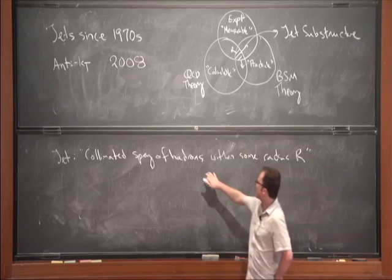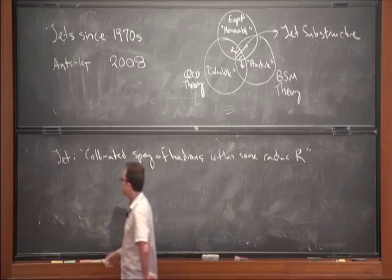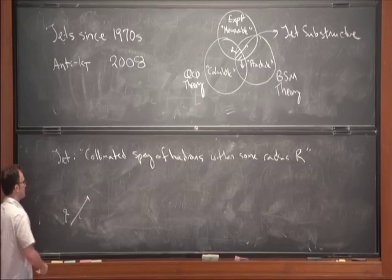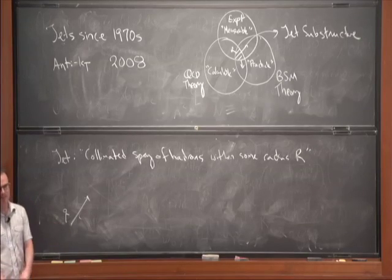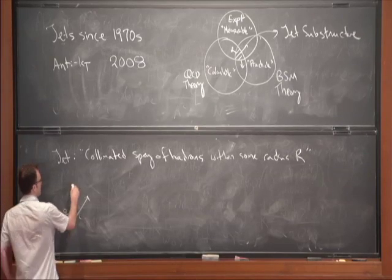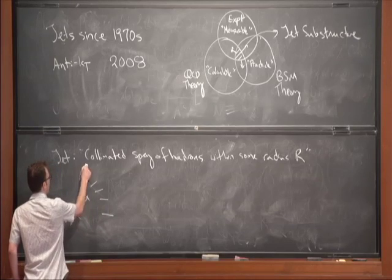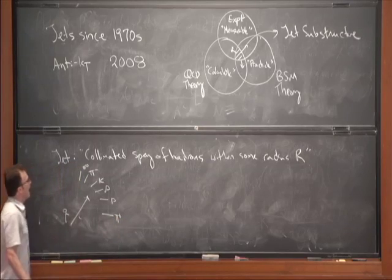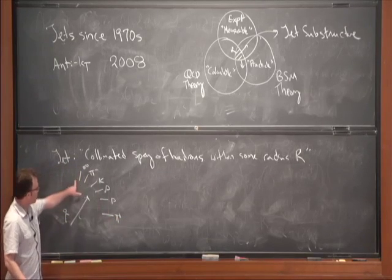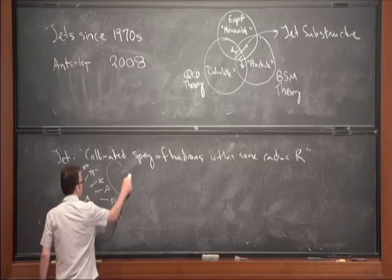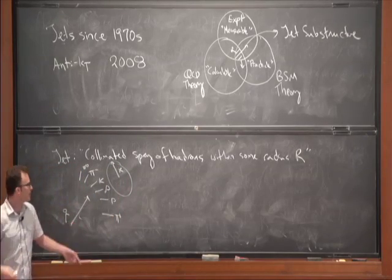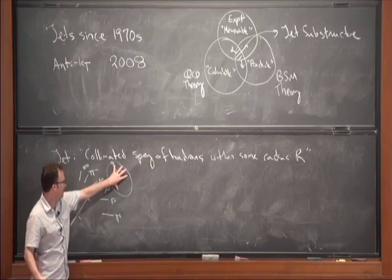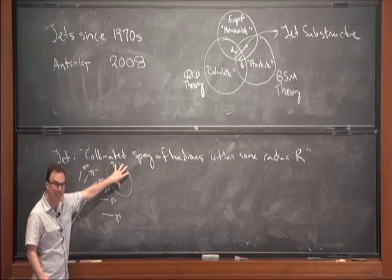By writing that definition, I've swept a huge amount of physics under the rug. A quark produced at short distances will fragment into hadrons — pions, kaons, rho mesons, maybe a proton or two — and those within radius R define the jet. But here's an ambiguity: the particles we measure at long distances form a color singlet state, yet the initiating object — a quark — is a color triplet. There is a fundamental mismatch between the color of what you measure and the color charge you care about.